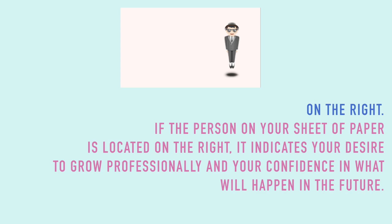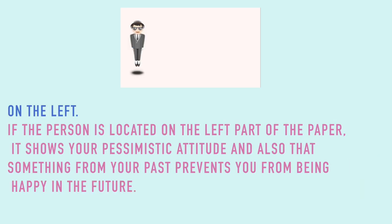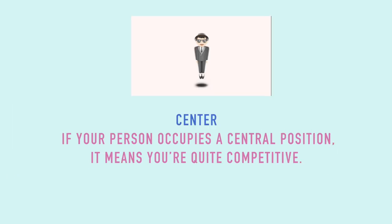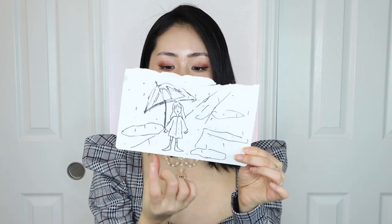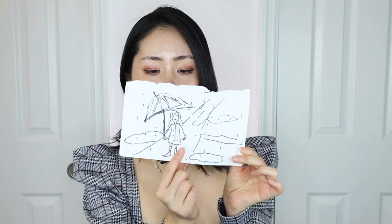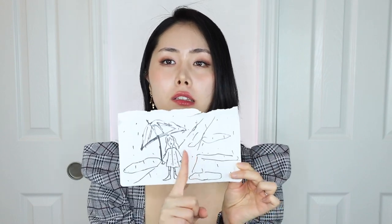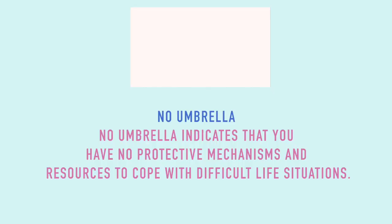Let's look at the orientation of the drawing. If the person is on the right side of the paper, it indicates your desire to grow professionally and confidence in the future. On the left, it shows a pessimistic attitude and that someone from your past may prevent future happiness. In the center, it means you're quite competitive. I drew mine in the middle but slightly to the left, so it tells me I'm pretty competitive.